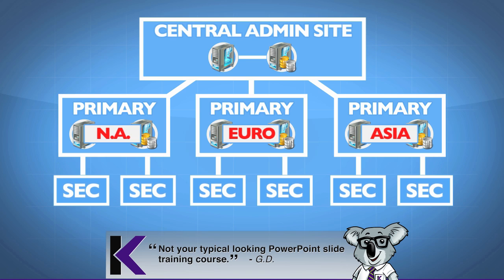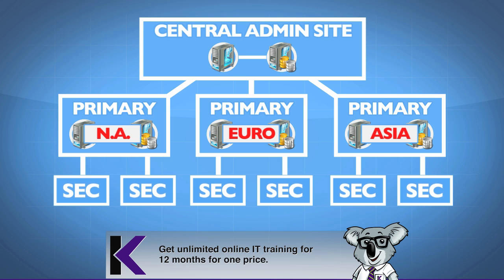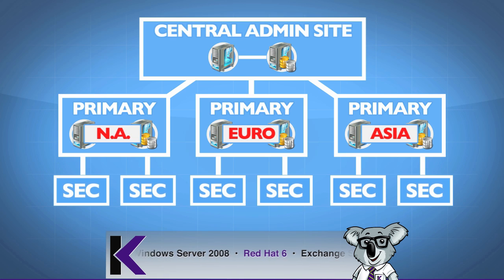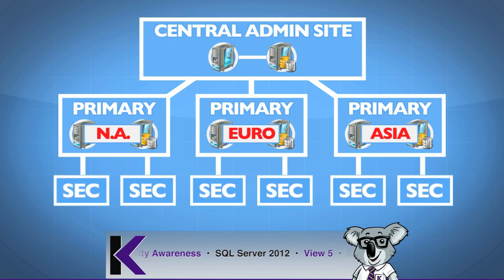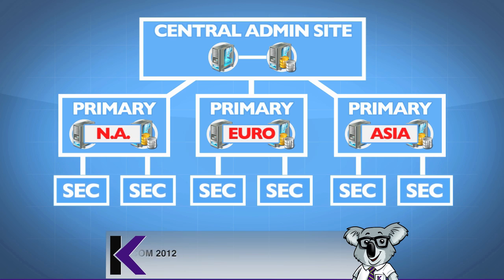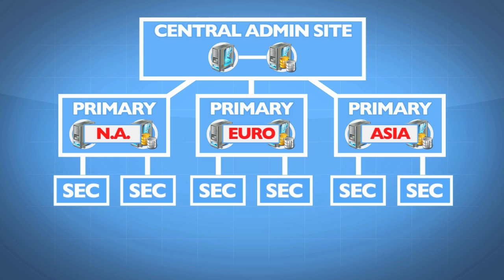An alternative in Config Manager 2012 is to simply put a distribution point server instead of creating an entire secondary site. The distribution point handles the heavy lifting, so clients on their local network get the large files — application packages, OS images — from it. Their management points may still reside back at the main office, but those exchange fairly small XML-based policy information. If you can handle that WAN traffic, it's the heavy packages we want to control, and the distribution point handles that locally.